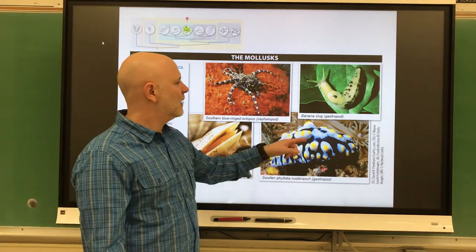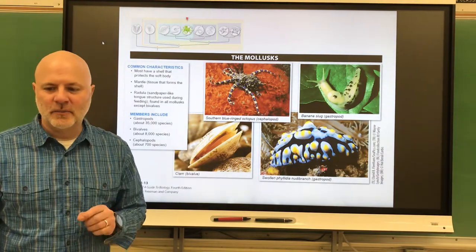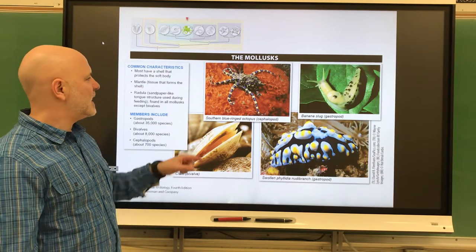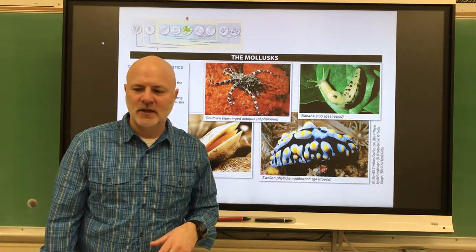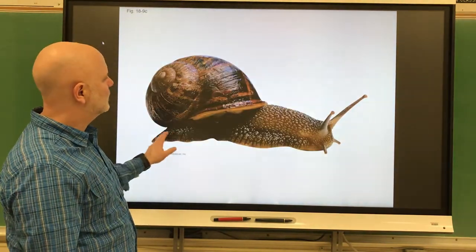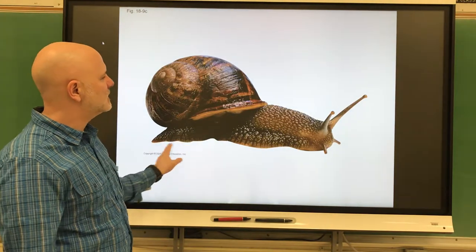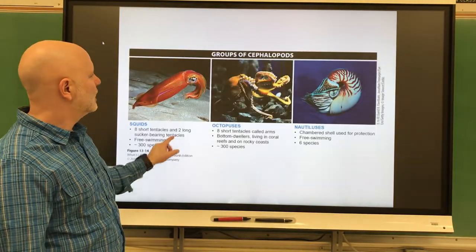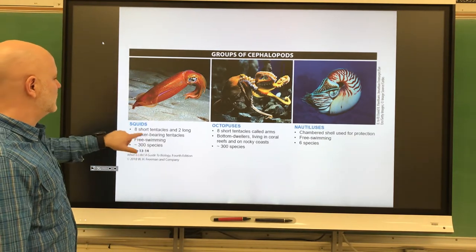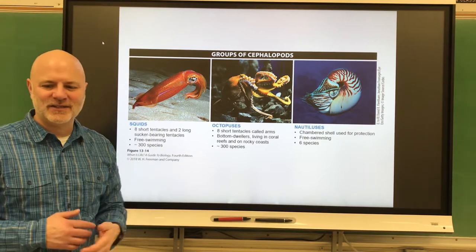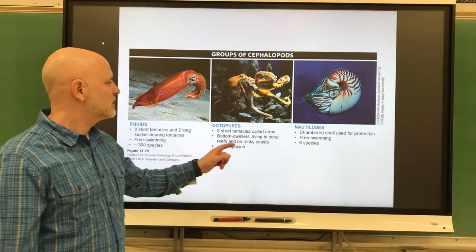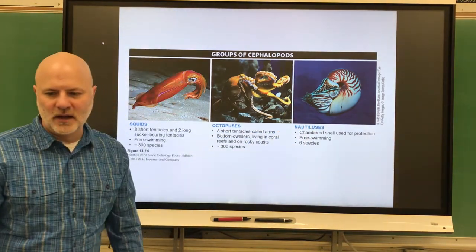Next are the bivalve mollusks, which include clams, scallops, oysters, and mussels. Lastly are the cephalopods — the squids. Here's showing a nudibranch, a snail, and a clam. Looking at the groups of cephalopods: squids have eight short tentacles and two long ones, for ten tentacles total. Octopuses have eight tentacles. Nautilus have many tentacles, and they have little chambers which help keep them buoyant in the water column.